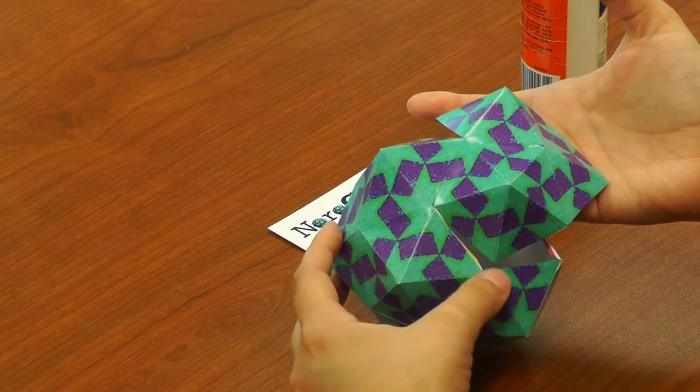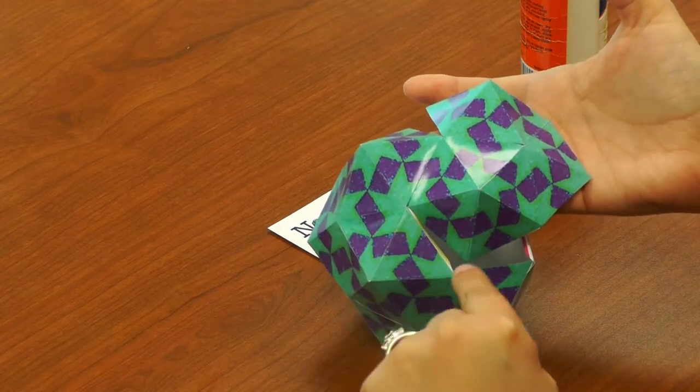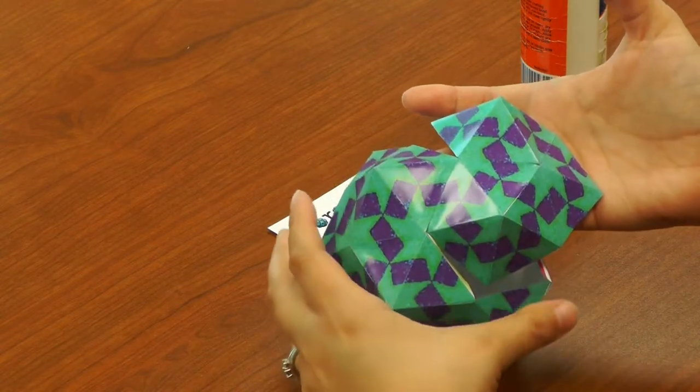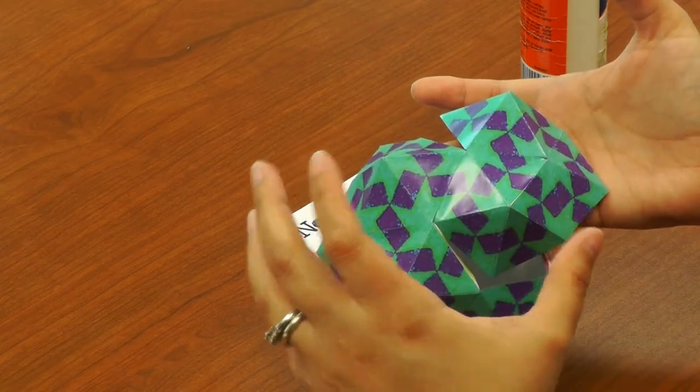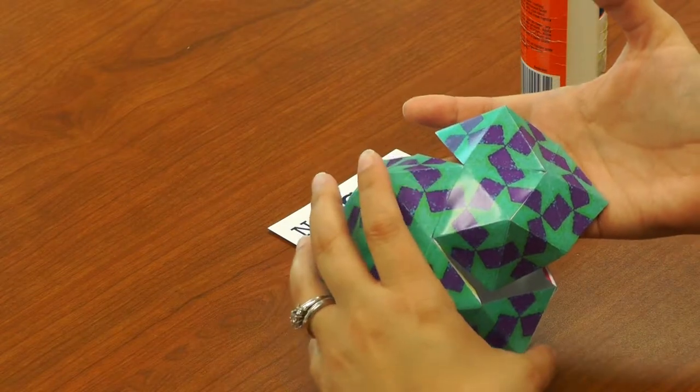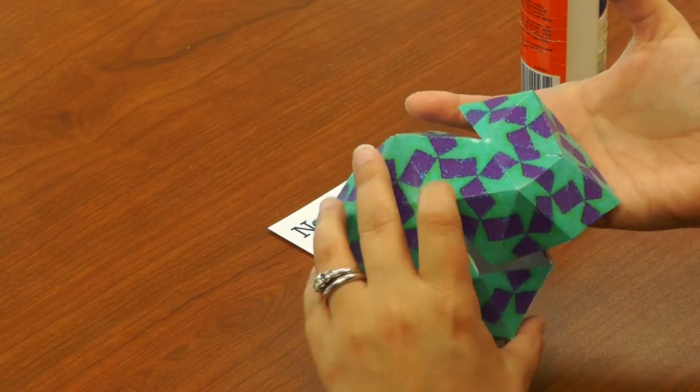What you're going to do from here is, as best as you can, just go around and glue the rest of the tabs. Sometimes what works best is to just put glue on all of the tabs and then gently bring everything together and hold it in place for a little while so that it seals. Ta-da! And there you go, you have your finished model.